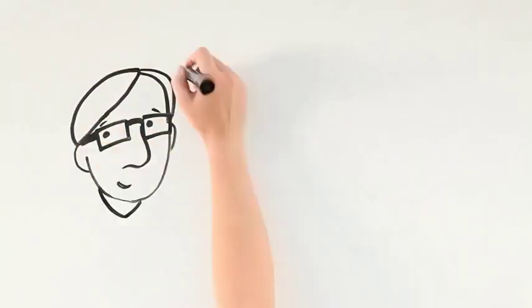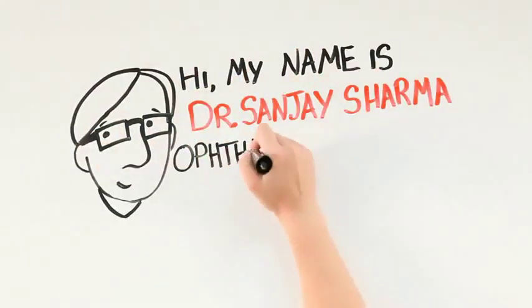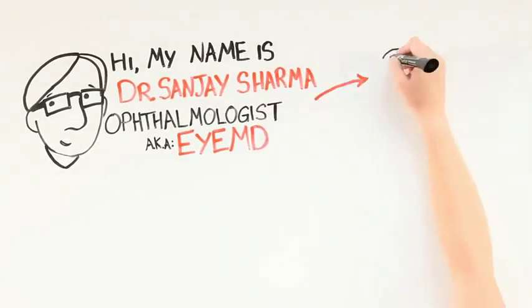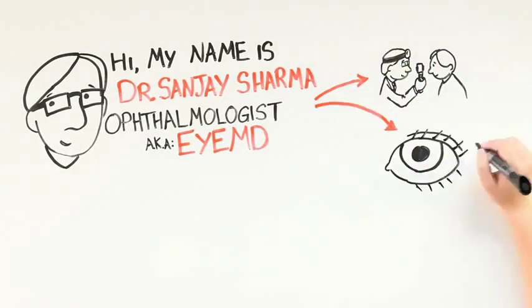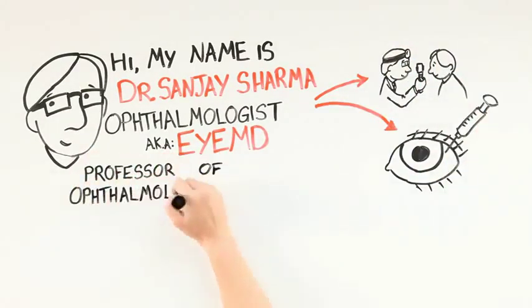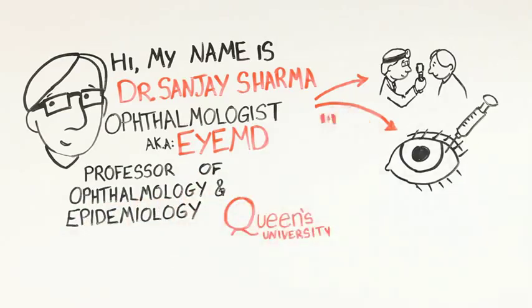Hi, my name is Dr. Sanjay Sharma and I'm an ophthalmologist, also known as an MD, who diagnoses and treats eye problems. I'm also a professor of ophthalmology and epidemiology at Queen's University.